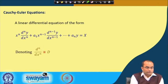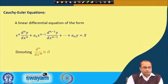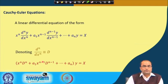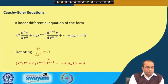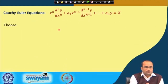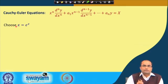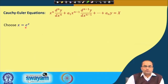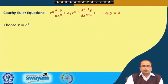Denoting the nth derivative as the operator D, we can write down this equation in the form x^n D^n plus a₁ x^(n-1) D^(n-1) operated on y equals the right-hand side. Now for the Cauchy-Euler equation, how to solve it: we will choose to substitute x = e^z. This independent variable x in the given equation will be replaced by the independent variable z via the relation x = e^z. That is a trick, and what this trick will do is finally convert the given differential equation into a linear equation with constant coefficients.